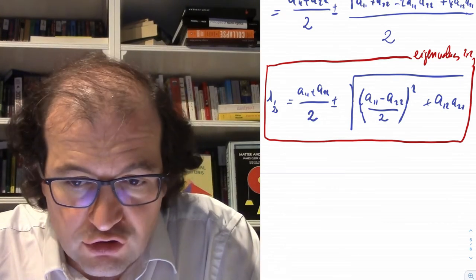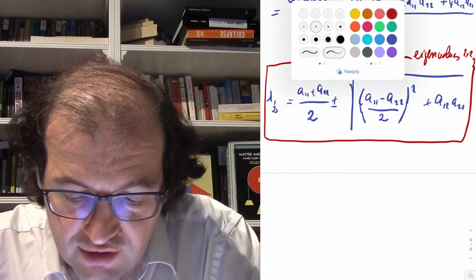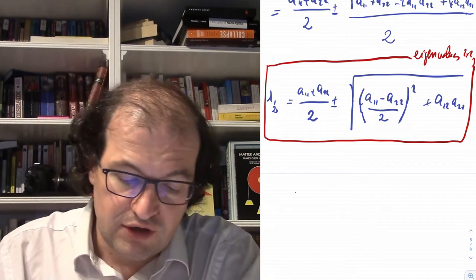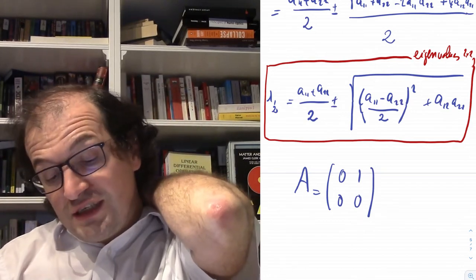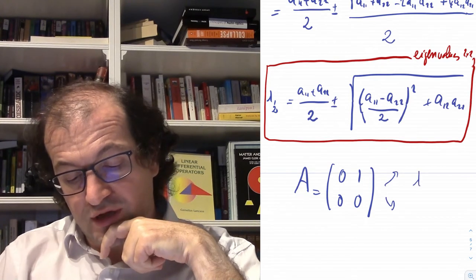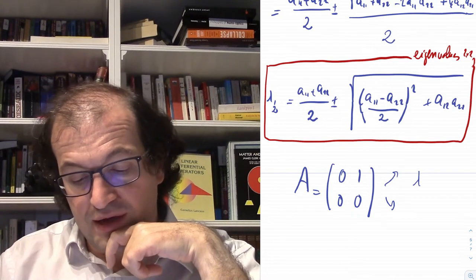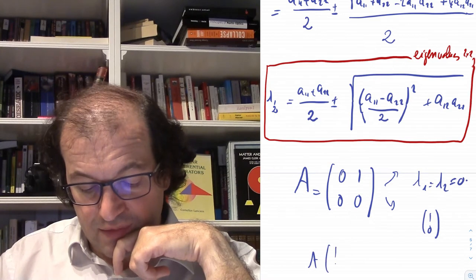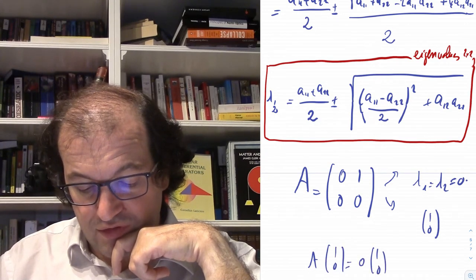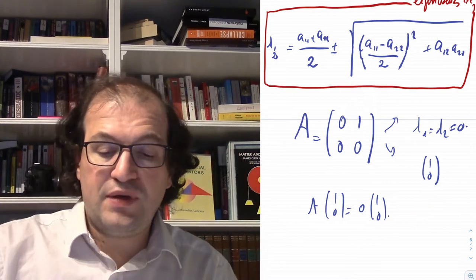It's important to know that we don't always get the same number of linearly independent eigenvectors as eigenvalues. A pathological case is a matrix with one column of zeros: the determinant is zero and both eigenvalues are zero, but there is only one eigenvector, namely (1, 0). We can check: A·(1,0)ᵀ = 0·(1,0)ᵀ. The eigenvector is non-zero, but the eigenvalue can be zero.